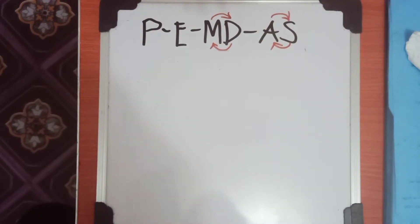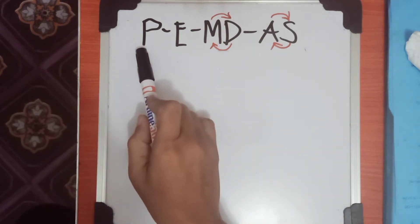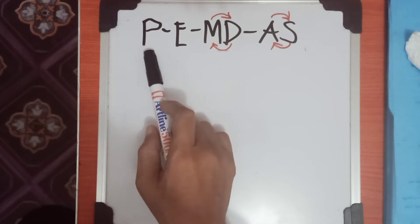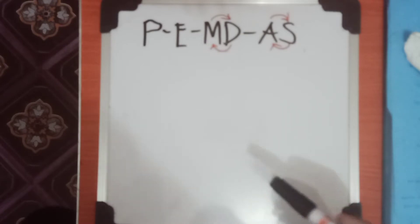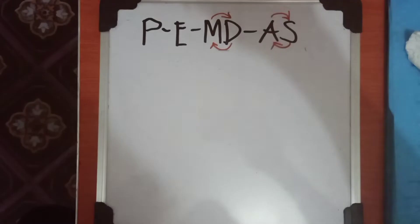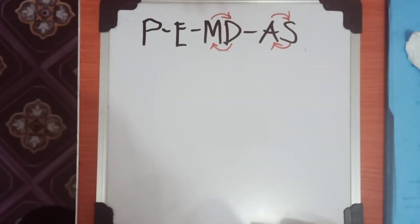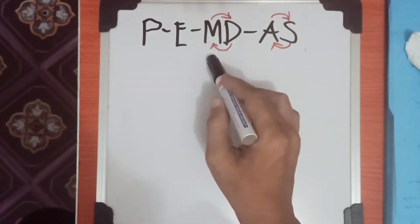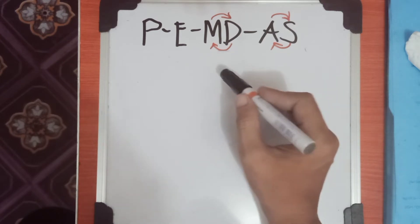Let's start the complete information about the order of operations and PEMDAS rules. First in the PEMDAS rule we have P, which represents Parenthesis. Parenthesis includes any grouping symbols, just like brackets or any kind of grouping symbols involved in the problem. Next is Exponent, and then Multiplication and Division.